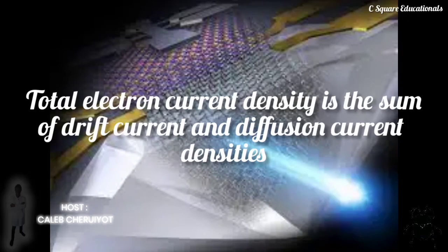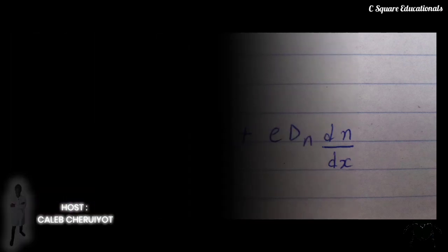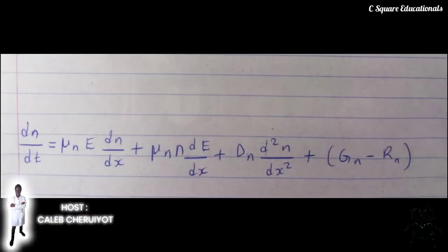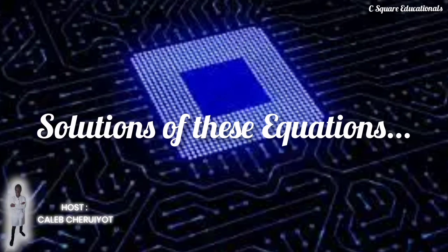Total electron current density is the sum of drift and diffusion current densities. Therefore, we obtain the final equation. The key to solving these equations in real devices is, whenever possible, to select regions in which most of the mechanisms are negligible, so that the equation reduces to a much simpler form.